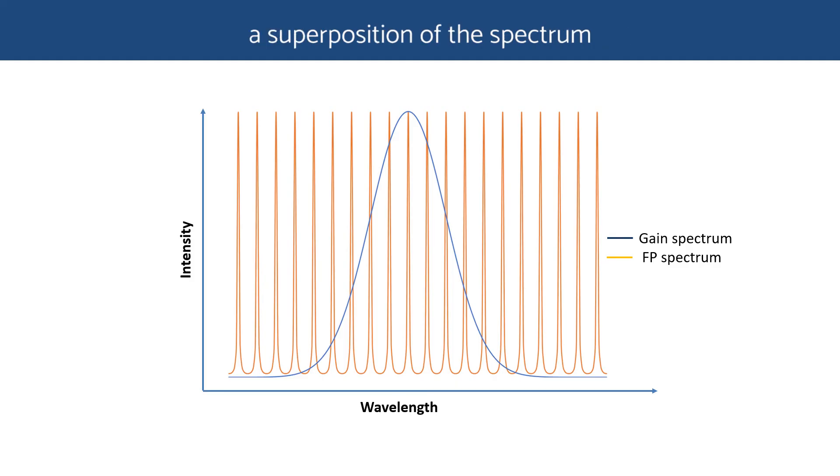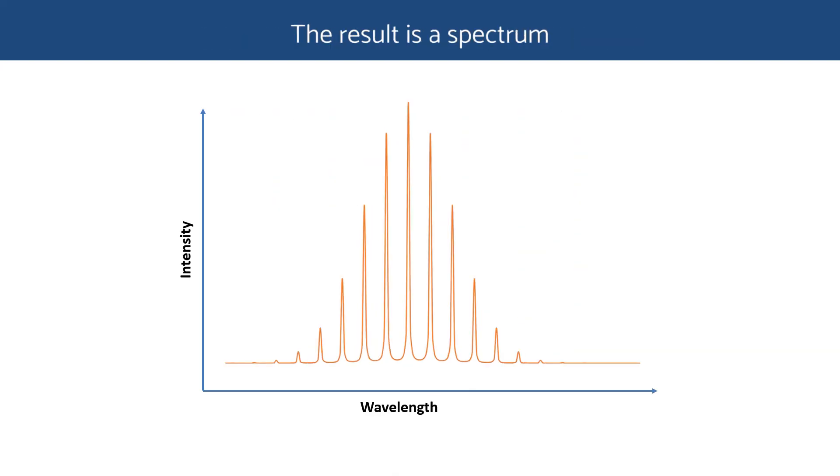However, in a Fabry-Perot laser, the spectrum is a superposition of the spectrum of the resonator and the compound semiconductor material gain spectrum. The gain spectrum depends on the semiconductor material and may resemble the corresponding LED spectrum discussed in the previous video. The result is a spectrum with a limited number of peaks and a much narrower line width than the LED. This is because the effective gain is affected by losses due to absorption, scattering, and reflection at the interface.